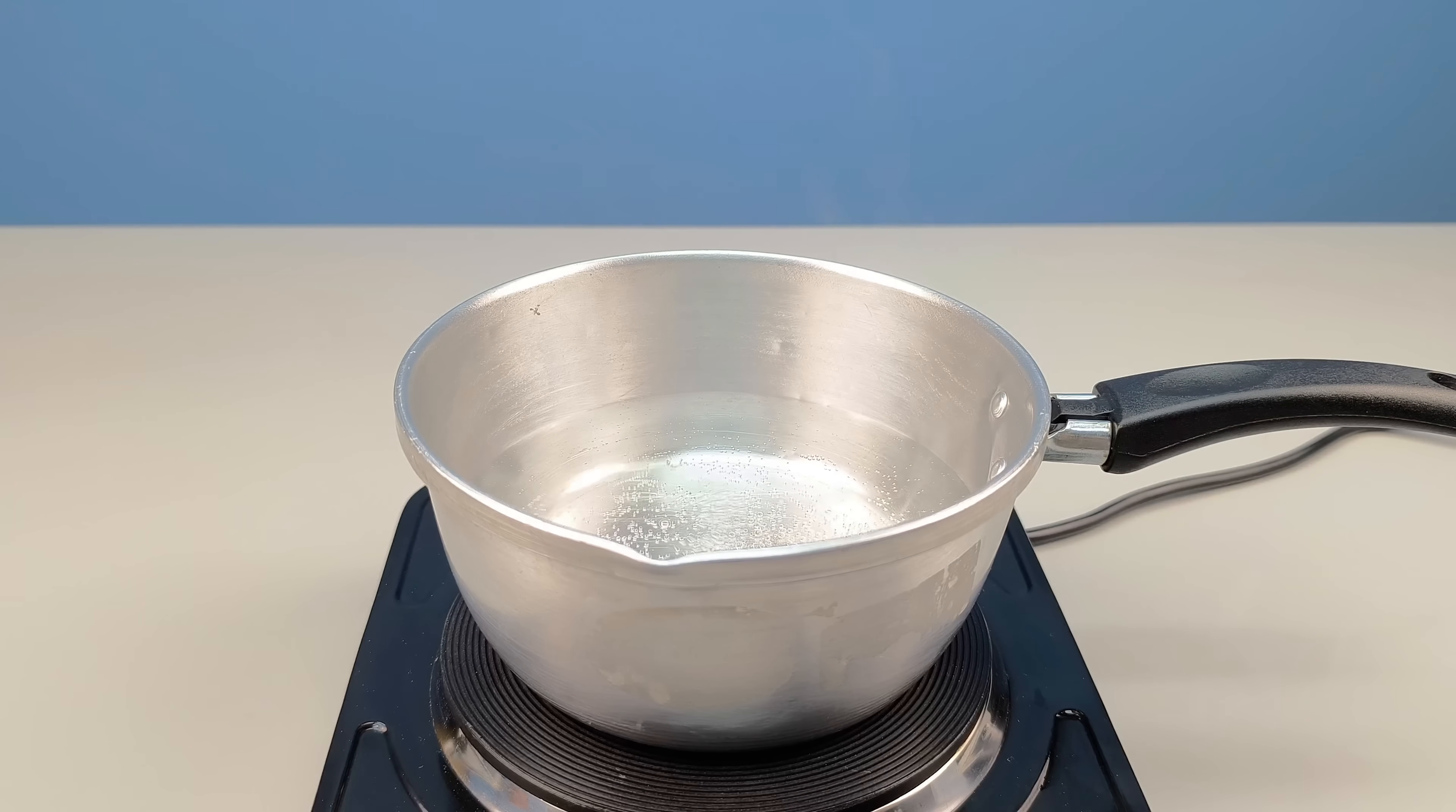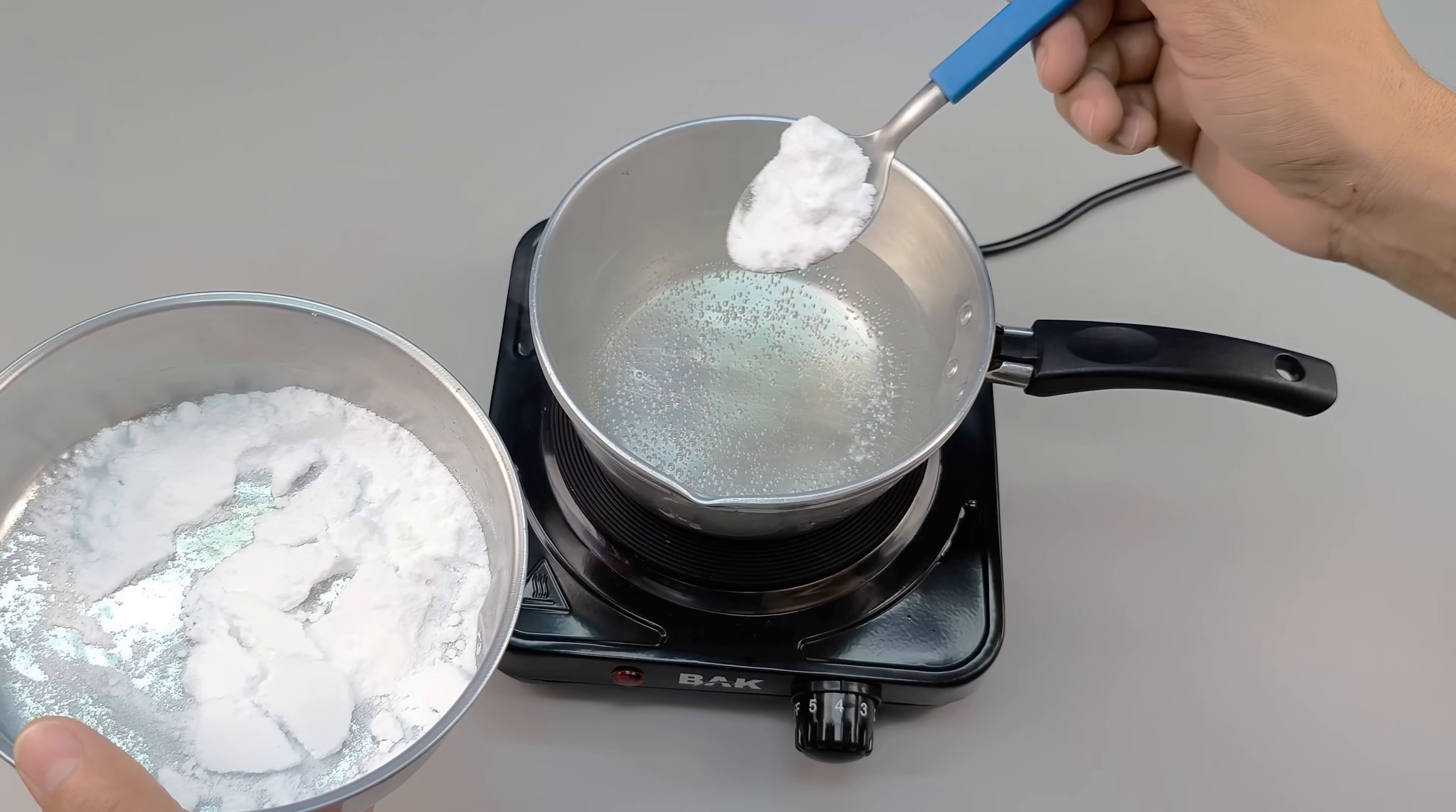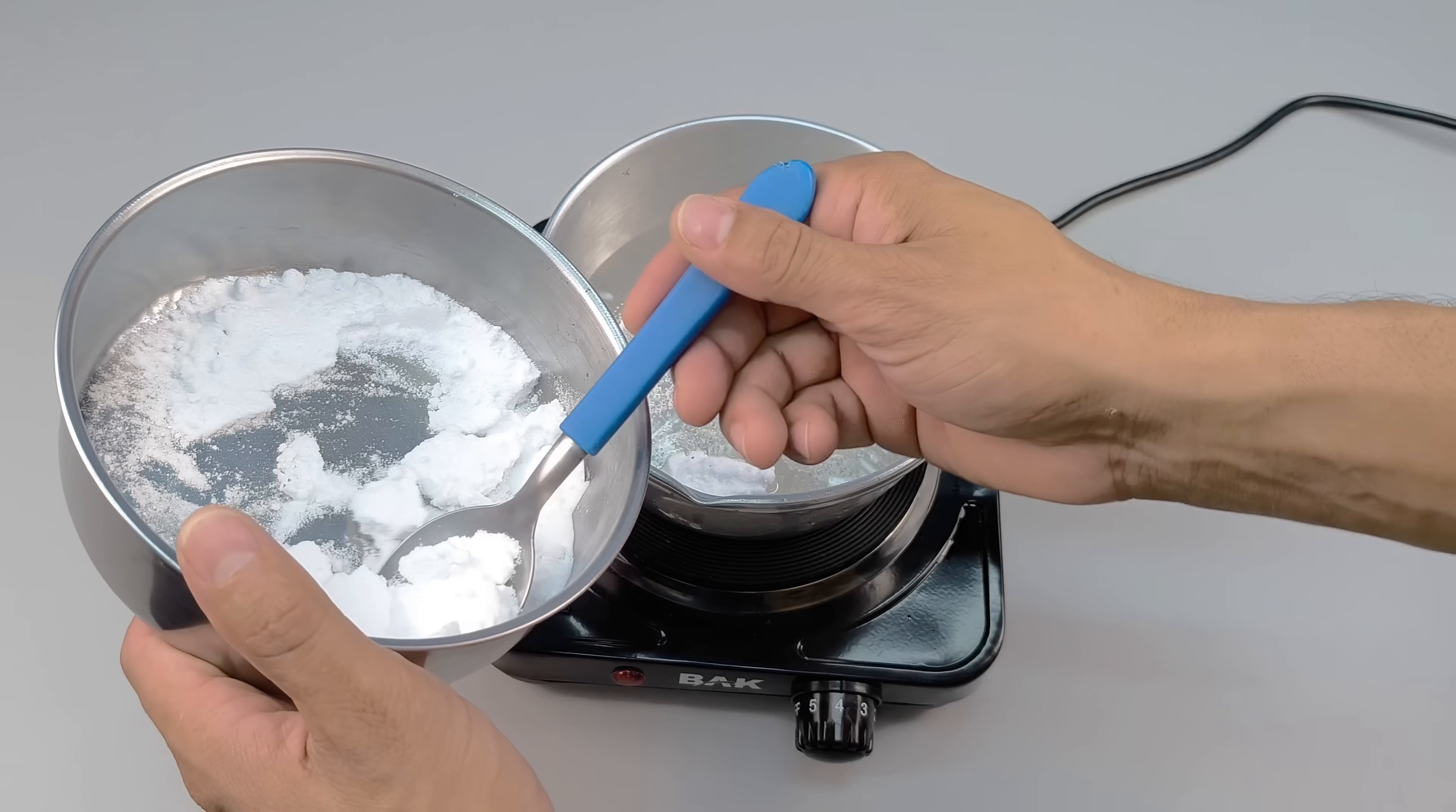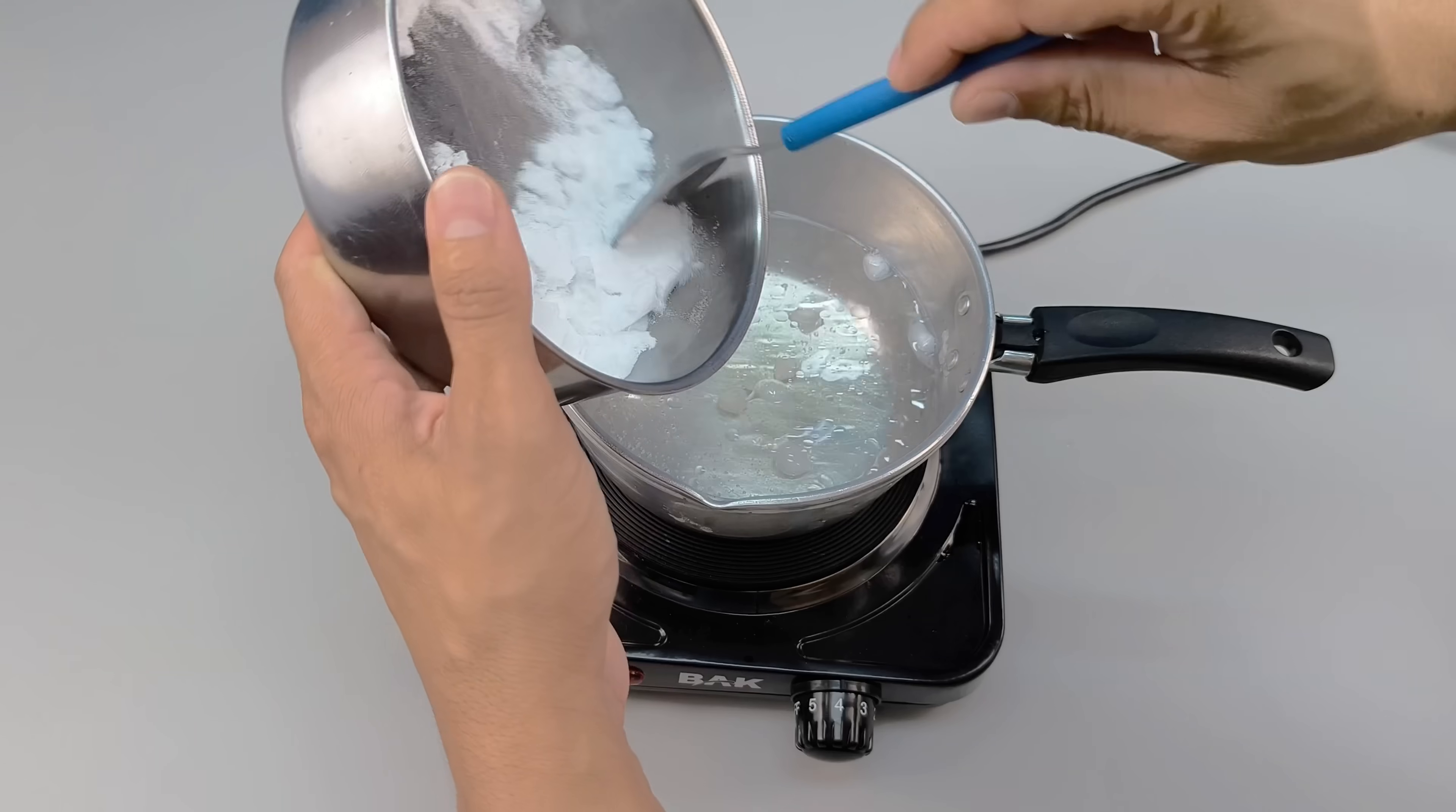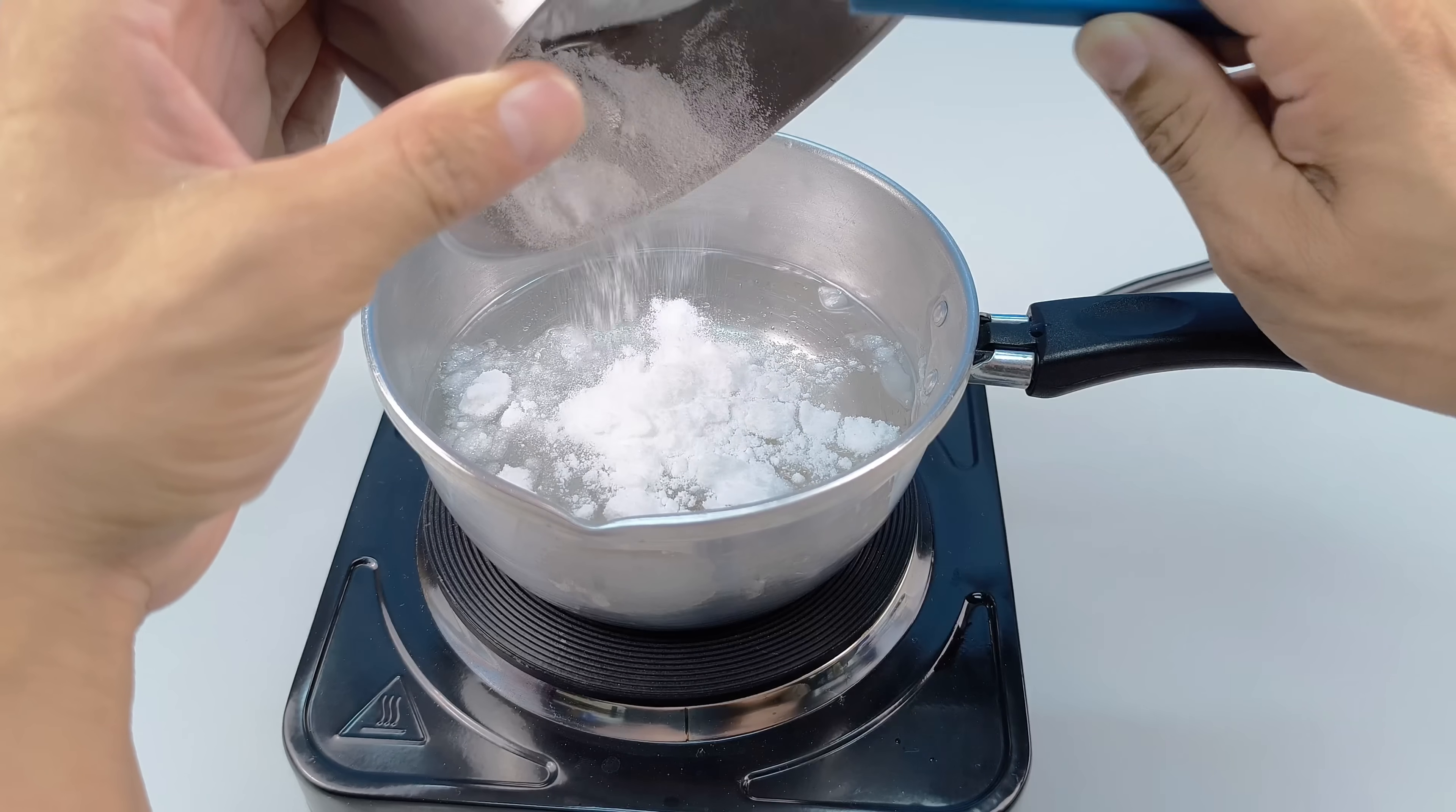Once the water reaches boiling point, gradually add the powder, stirring constantly with a wooden, stainless steel, or silicone spoon to prevent lumps from forming at the bottom of the pan.